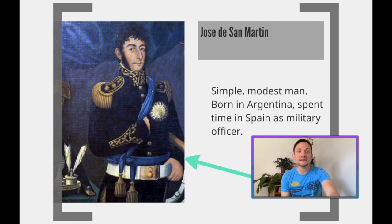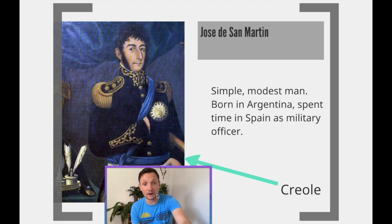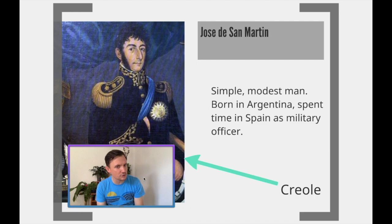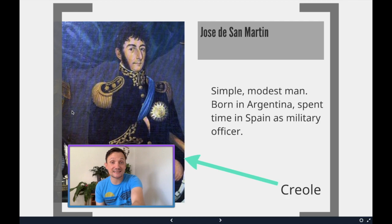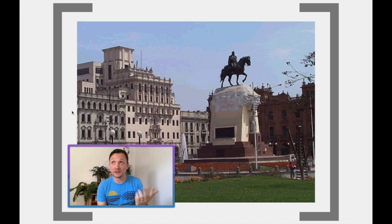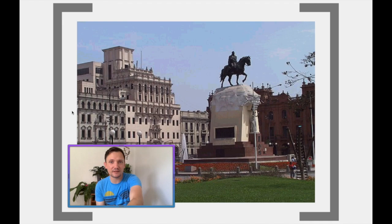José de San Martín led the independence movements in the southern region. He's a simple, modest guy, born in Argentina, who spent a lot of time in Spain as a military officer — so he's very formally trained. He's a Creole all the same, just a wealthy one. San Martín decides it's time to liberate Argentina, Chile, and other territories. Notably, Bolivia is actually liberated by Bolívar — that's why it's named directly after him: Simón Bolívar, Bolivia.